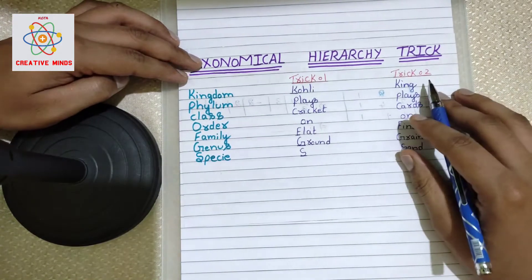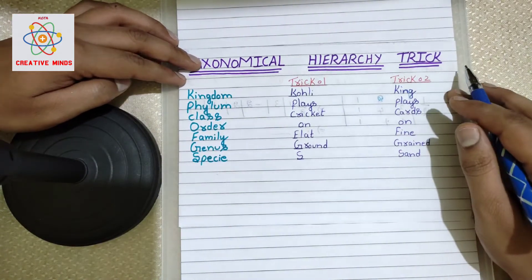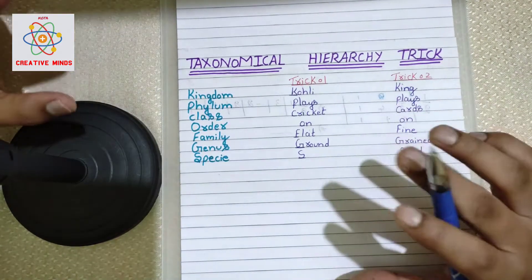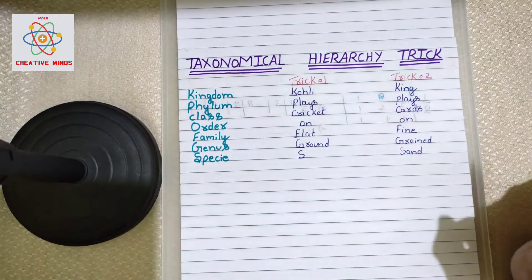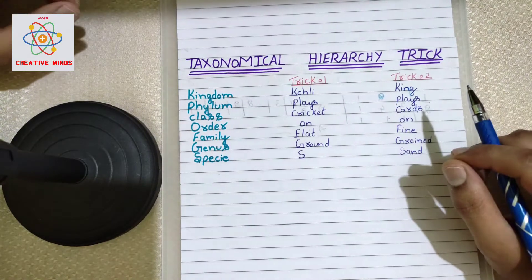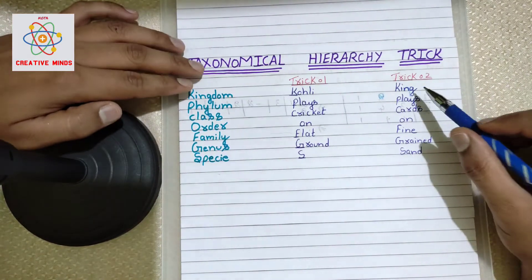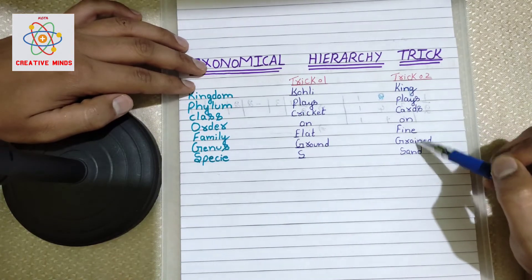Next, let us come to another trick. This is also a very simple and easy trick. In this part, we have tons of shortcut tricks, and you can use any shortcut trick. The second shortcut trick which I feel is easy and comfortable is: King plays cards on fine grained sand.